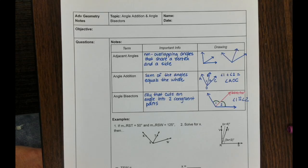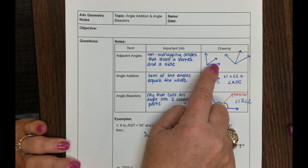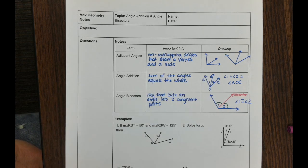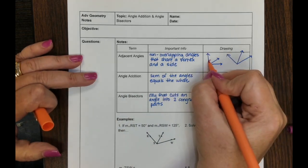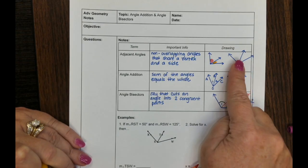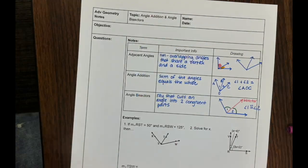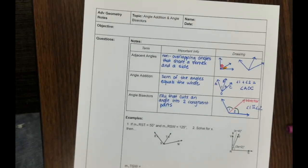We recently talked about how to name angles and what kinds of angles there are, so let's talk about how we can use angles in geometry. One type we'll be talking about all year is adjacent angles. Adjacent means beside — these are two angles that are beside each other, non-overlapping. Adjacent angles share a side in the interior and share a vertex.